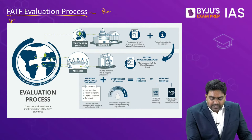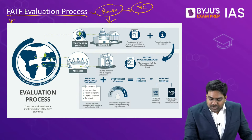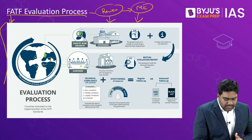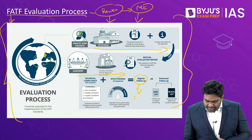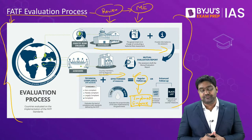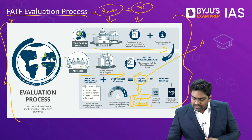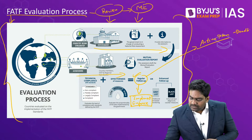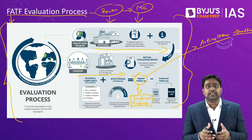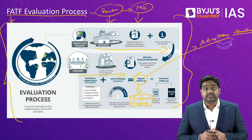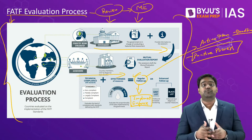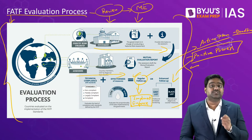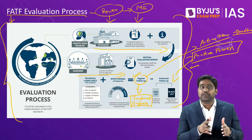FATF has the powers to frequently review the performance of countries through the mutual evaluation process, checking whether countries and jurisdictions are following and implementing these standards. Those countries which are falling behind are first given a time-bound action plan. But if a country is deliberately failing and not showing any seriousness to improve its performance, then FATF will acquire punitive powers. It can actually take action against countries — that is why FATF is a powerful organization.